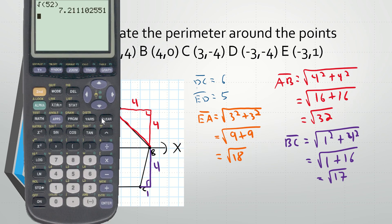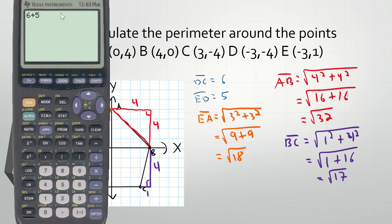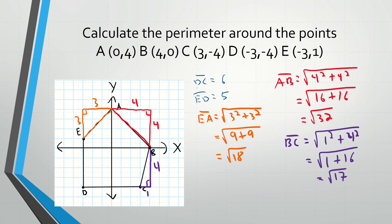Now we can take our calculator and add all five distances. So it's 6 plus 5 — those are DC and ED — plus the square root of 18, plus the square root of 32, plus the square root of 17. We add them up and we get that the perimeter is about 25 units.